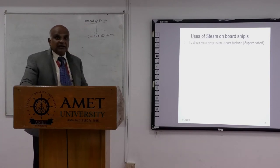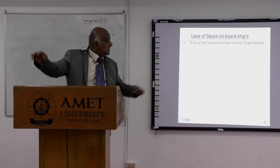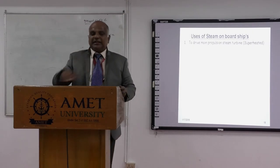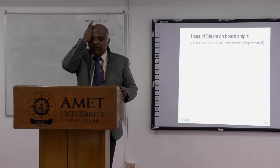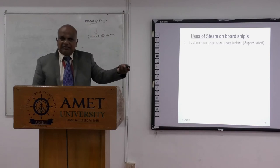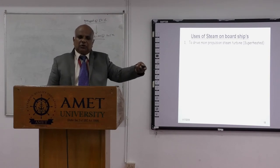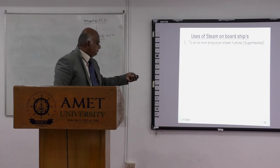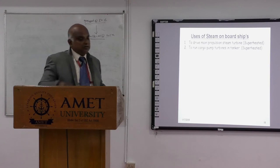There are 14 uses of steam on a ship. First, to drive the main propulsion steam turbine in a steamship, superheated steam is required at around 435 degrees centigrade. Steam exists in three varieties: wet steam, dry steam, and superheated steam. In a motor ship, steam temperatures are around 150 to 200 degrees centigrade and superheated steam is not used as much.